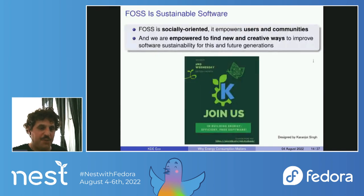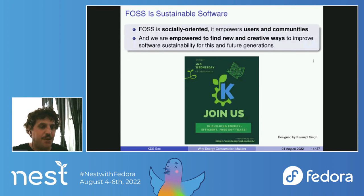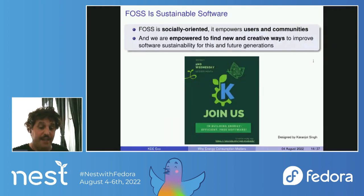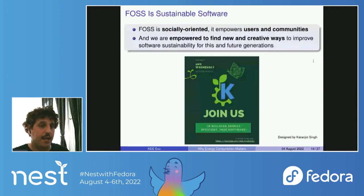So what does this have to do with free and open source software? FOSS is inherently socially oriented. As Matthew Miller described this morning, Fedora wants to make a better world for everybody — free software empowers users and communities to do so. The open development process means both users and developers have influence; users can become developers and contribute. They can submit bug reports or feature requests so developers build what society wants, not just what companies want. This empowerment means we can find new and creative ways to improve software sustainability for this and future generations.